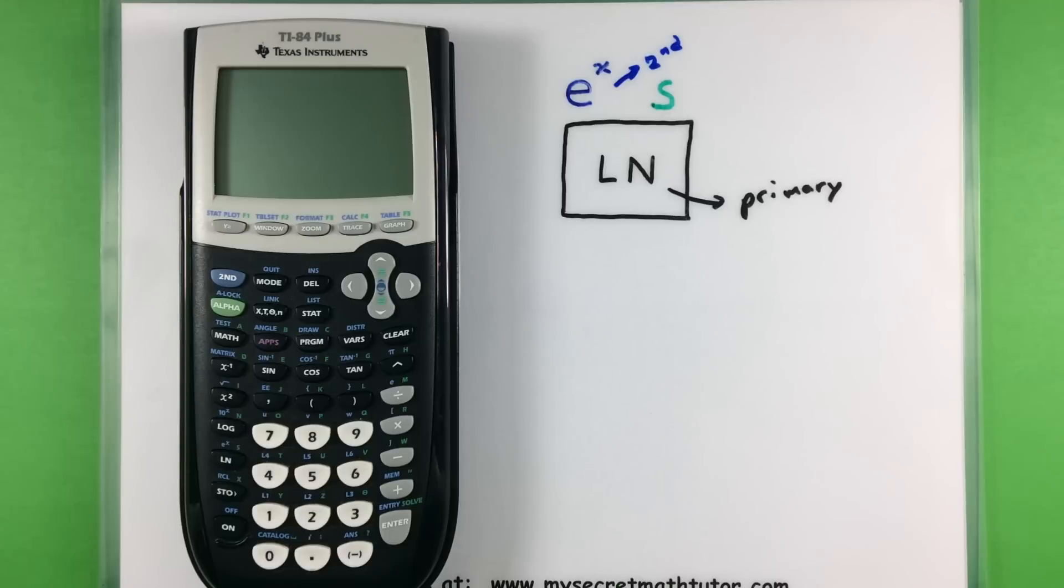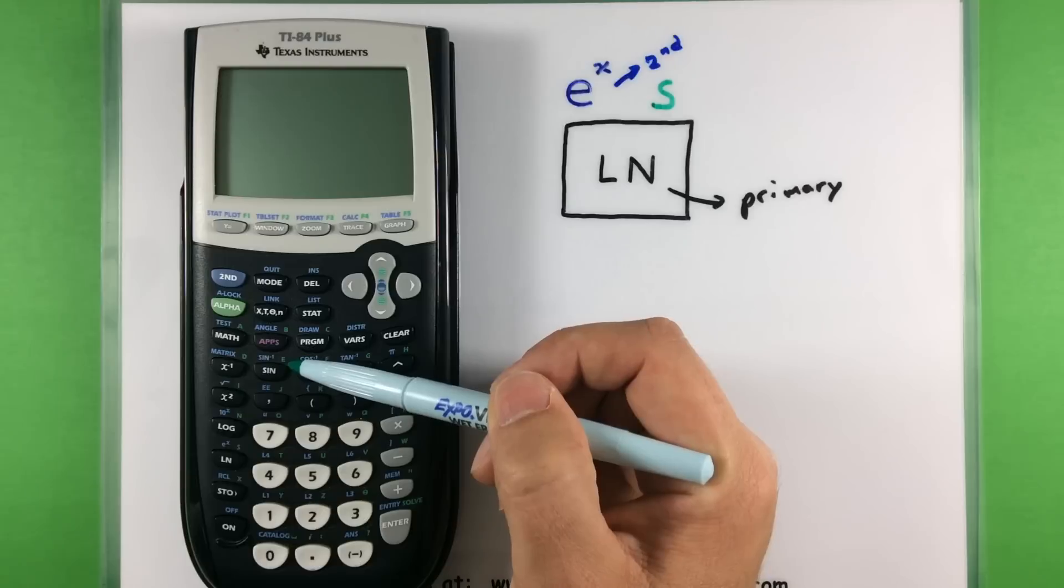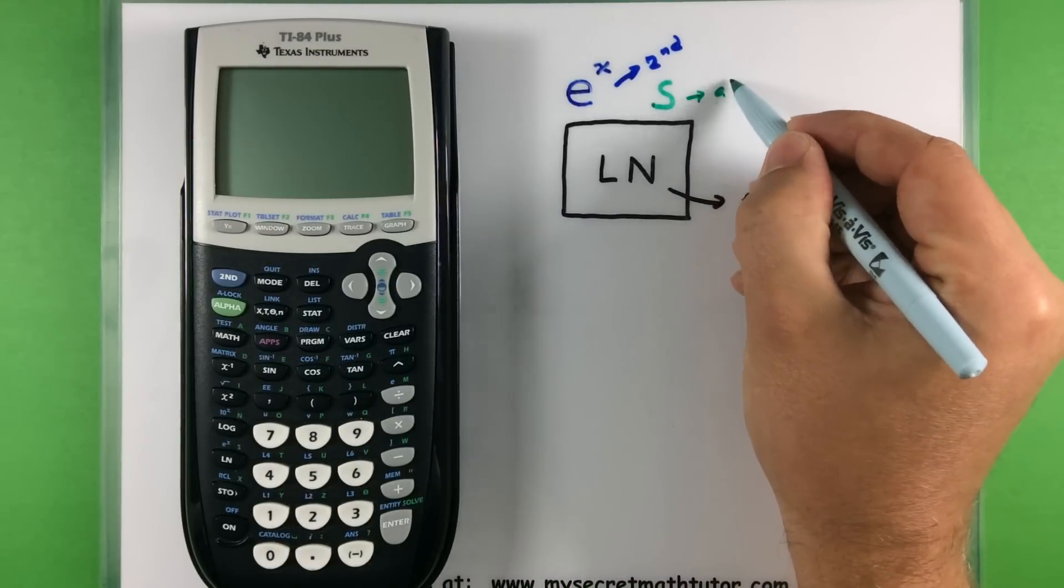Now lastly there's an alpha option for these graphing calculators. So in green you'll notice a lot of different letters like A, B, C, D, E, F, G. In fact I have the whole alphabet up here. And if I want to access any of those I have to press my green alpha button. And then I'll go ahead and I'll hit the button associated with that letter. So I'll just say alpha.